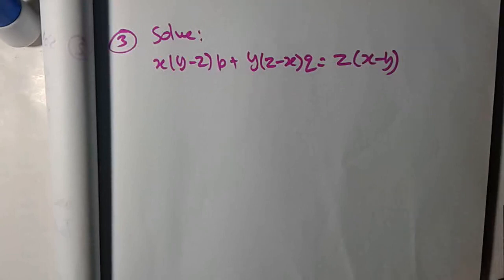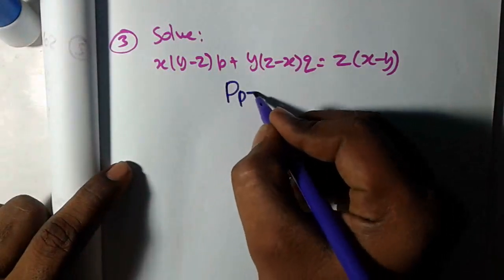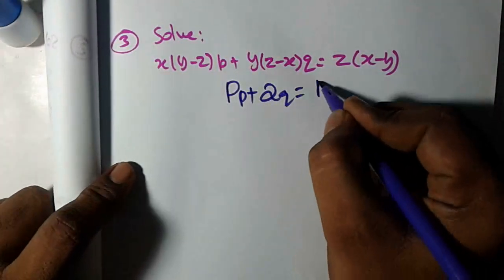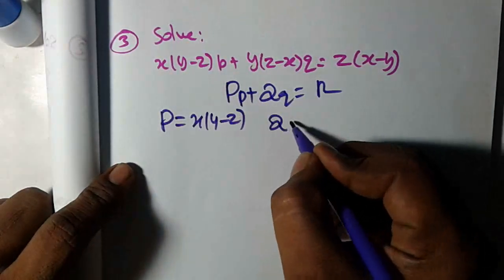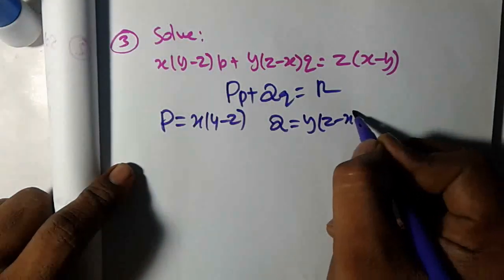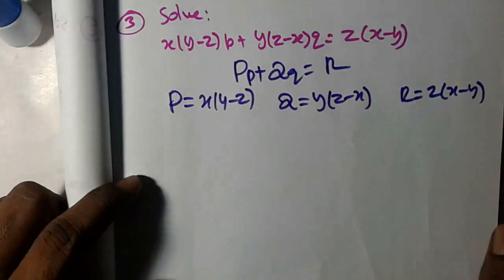Hello students, in this problem the Lagrangian, you know, easy problem. This is of the form P, capital P is x(y-z), capital Q is y(z-x), and capital R is z(x-y). Okay, direct.